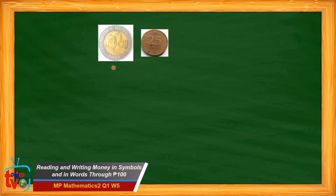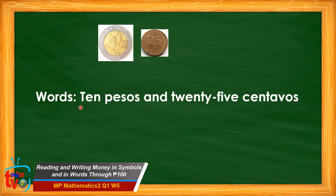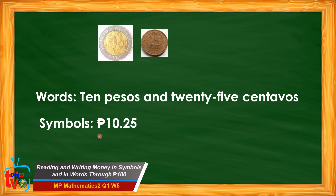Another example: we have the ten-peso coin and the twenty-five centavo coin. How do we write it in words? We write the words ten pesos and twenty-five centavos. What about in symbols? We write the peso sign first, then ten, followed by a decimal point and twenty-five. The decimal point separates the pesos from centavos. We read this as ten pesos and twenty-five centavos.